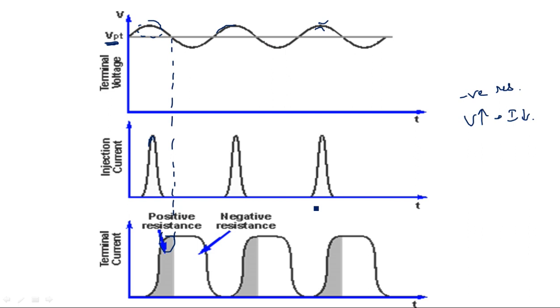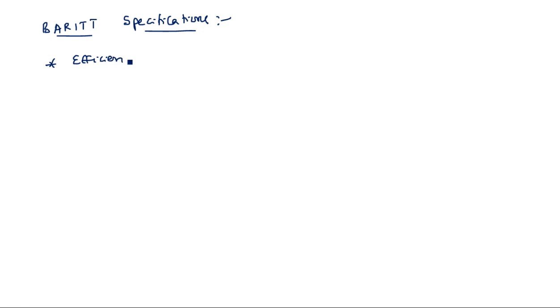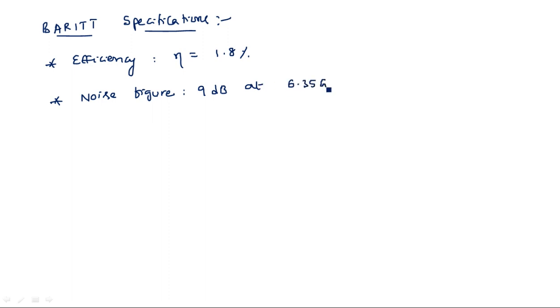This is the Barrier Injection Transit Time device and its operation. Coming to the BARITT specifications — efficiency, noise figure, frequency of operation, and output power. The efficiency eta is equal to 1.8%, which is very low compared to the previous two diodes. The noise figure is 9 dB at 6.35 GHz with 15 dB gain.